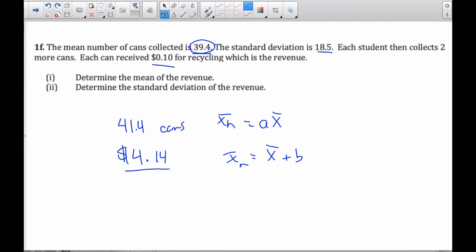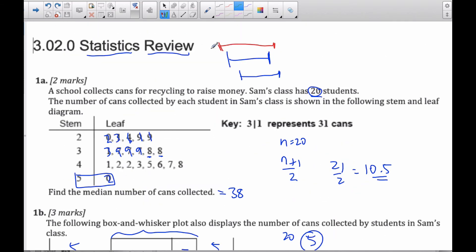However, the standard deviation, let me switch to green now. The standard deviation, I know when I add two cans, it still remains the same as 18.5 as a standard deviation. But now I'm going to take each of these cans, and if I think about this, I'm going to take each of these values, and I'm going to multiply it by 0.1. Like, it's going to go, the decimal place is going to be, as opposed to 22 cans, it's going to be 2.2 is what it's worth.